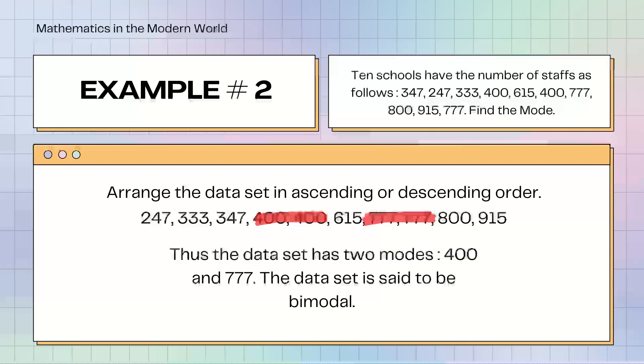Example number 2. 10 schools have the number of staffs as follows: 347, 247, 333, 400, 615, 400, 777, 800, 915, 777. Find the mode. After we arrange the dataset in ascending or descending order, the dataset has said to be two modes: 400 and 777. Pag dalawa ang mode, ibig sabihin bimodal yun.